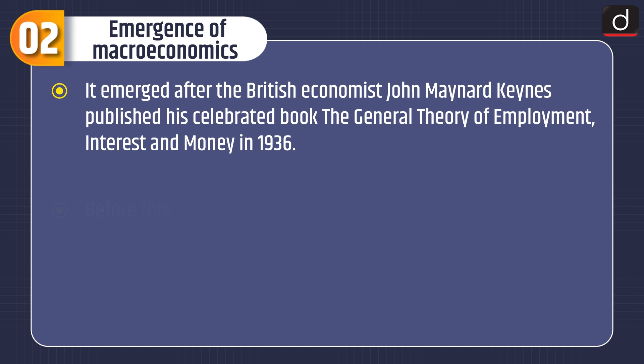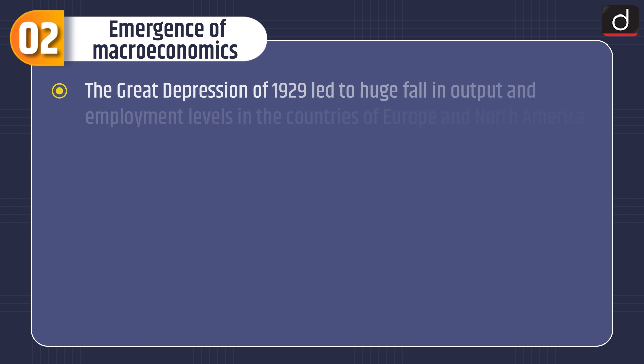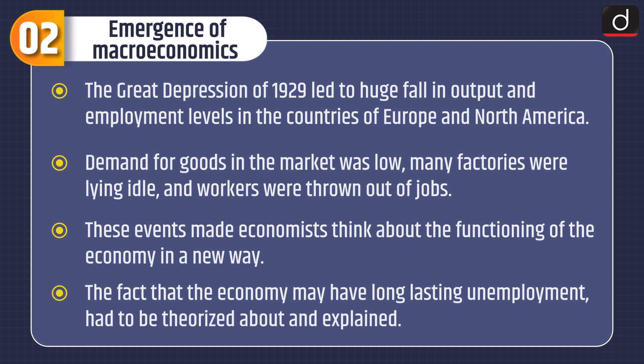Now let's discuss about the emergence of macroeconomics. It emerged after the British economist John Maynard Keynes published his celebrated book, The General Theory of Employment, Interest and Money in 1936. Before this, the thinking was that all the resources are fully utilized — that is, all laborers are getting work, all factories working at full capacity. The Great Depression of 1929 led to a huge fall in output and employment levels in the countries of Europe and North America. Demand for goods in the market was low, many factories were lying idle and the workers were thrown out of jobs. These events made economists think about the functioning of the economy in a new way. The fact that the economy may have a long-lasting unemployment had to be theorized about and explained.